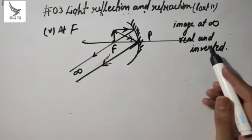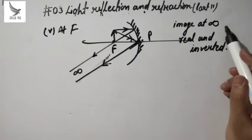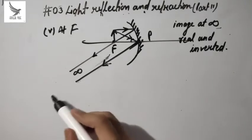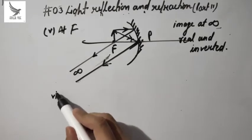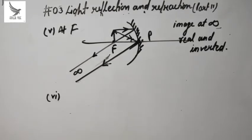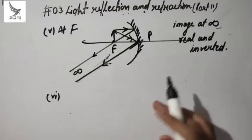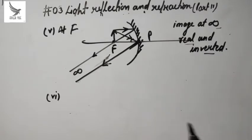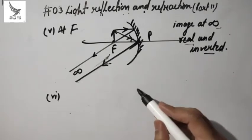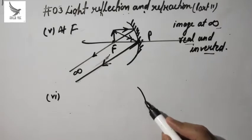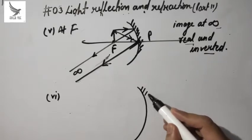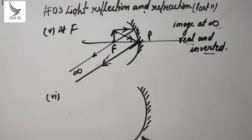So the properties of the image: first, it is formed at infinity, and it is real and inverted. After this, the sixth case is very very important — because all the images formed so far are real and inverted, but in this case we get a virtual and erect image. Let's see how.